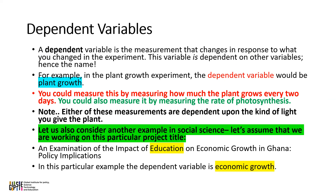Let's also consider an example in the social science arena. Assume we are working on this project titled: An Examination of the Impact of Education on Economic Growth in Ghana — Policy Implications. In this example, the dependent variable is economic growth, because you intend to explain economic growth. You intend to utilize education to explain economic growth in Ghana. So economic growth here is the dependent variable.